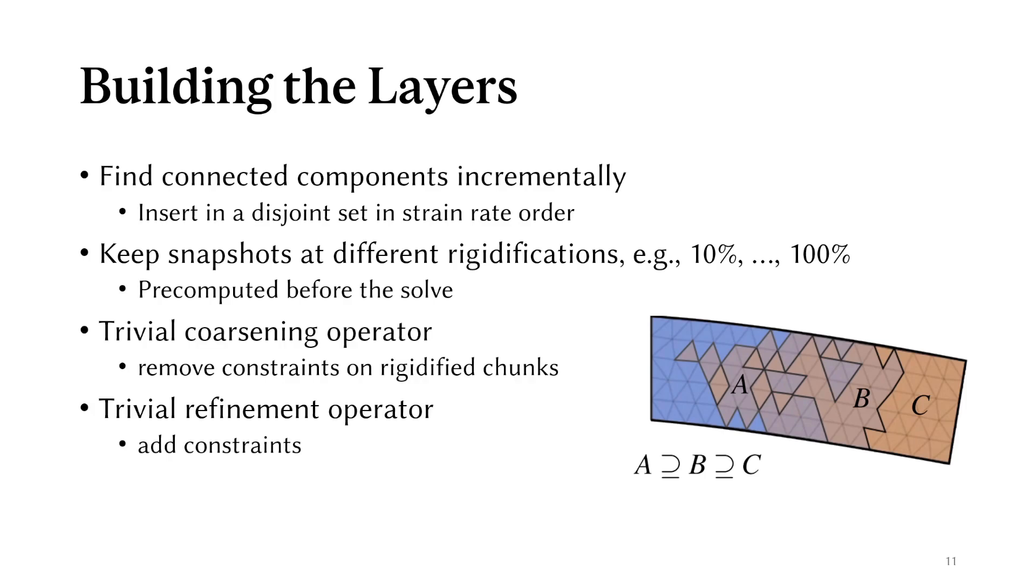We can define trivial operators for the coarsening and refinement. For coarsening, we simply remove elastic constraints within elements and compute rigid body properties. For refinement, we add the constraints back. Simple enough.